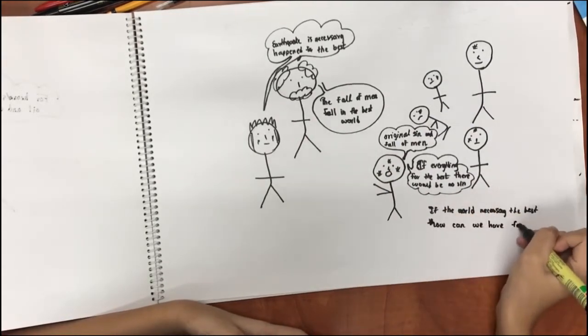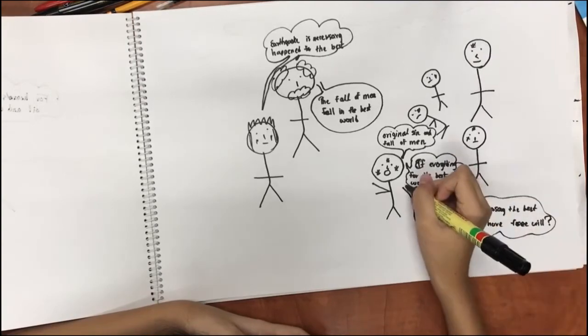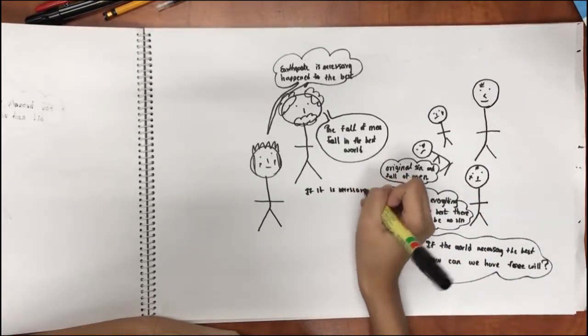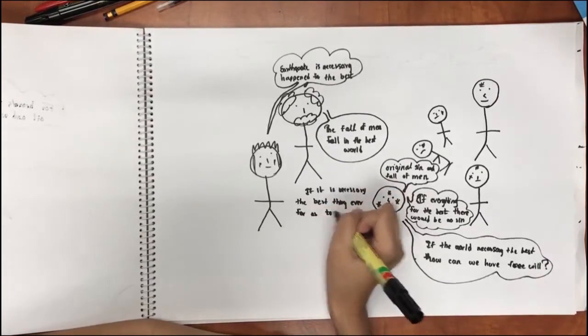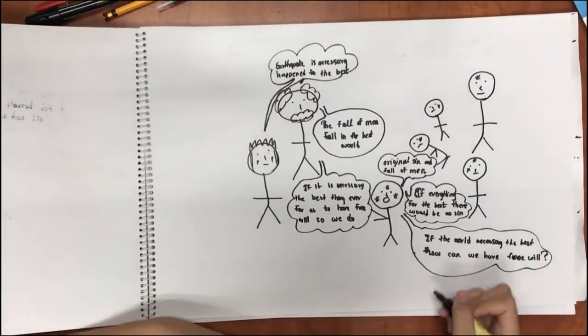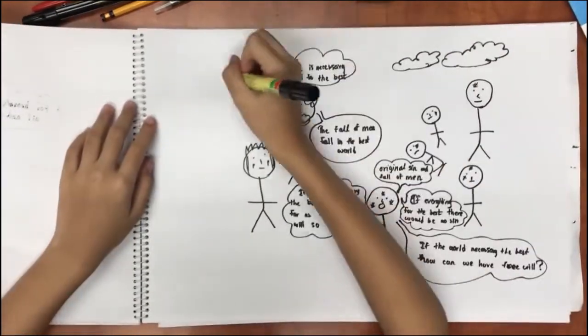Pangloss countered that the fall of man fell into the best world ever. The man retorted that if the world is necessarily the best, how can there be free will? Pangloss said, if it is necessarily the best thing ever for us to have free will, so we do.